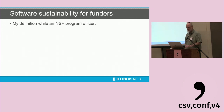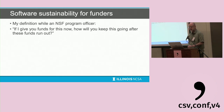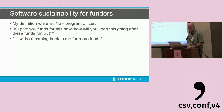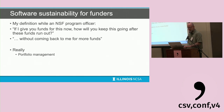From the funder perspective — I was an NSF program officer for four years — the question I would give was: if I give you funds for this project now, how are you going to keep it going after those funds run out? And then I'd say: without coming back to me for more funds. Because that was almost always the first answer. This is really portfolio management — a funder wants to build things they can be proud of that endure with as little ongoing money as possible.